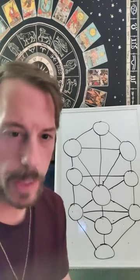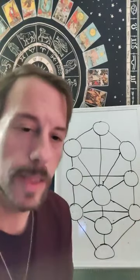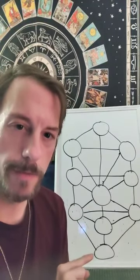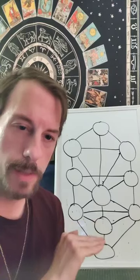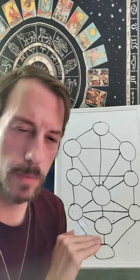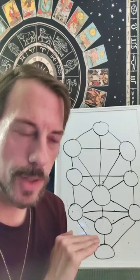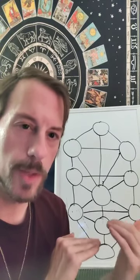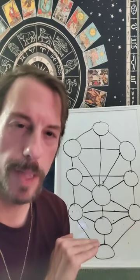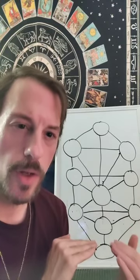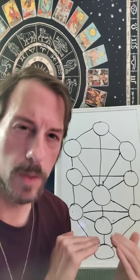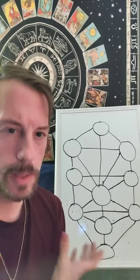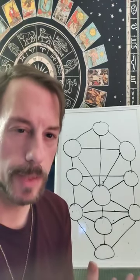The Tree of Life also shows all the subtler aspects. This bottom Sephirah Malkuth represents the physical dimension, and all that is above this represents higher spiritual layers of reality. Journeying up the tree, we can come to experience higher aspects of our being. We can come to know more subtle aspects of the world and of ourselves. The Tree of Life represents all aspects of the psyche and all aspects of the universe.